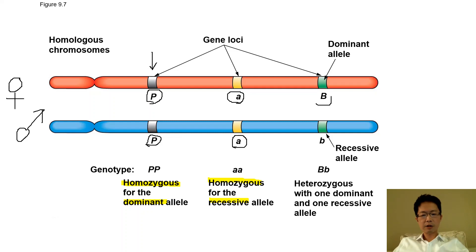For the last gene, it occupies yet another locus with one big B and one small b allele. We call this heterozygous dominant, because only the dominant allele big B will be expressed — the recessive allele small b will not express its phenotype.